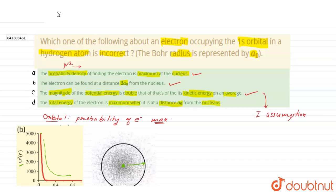The total energy of the electron is maximum when it is at a distance A0 from the nucleus. So, let's check it, let's check it, what is the formula of energy of electron.